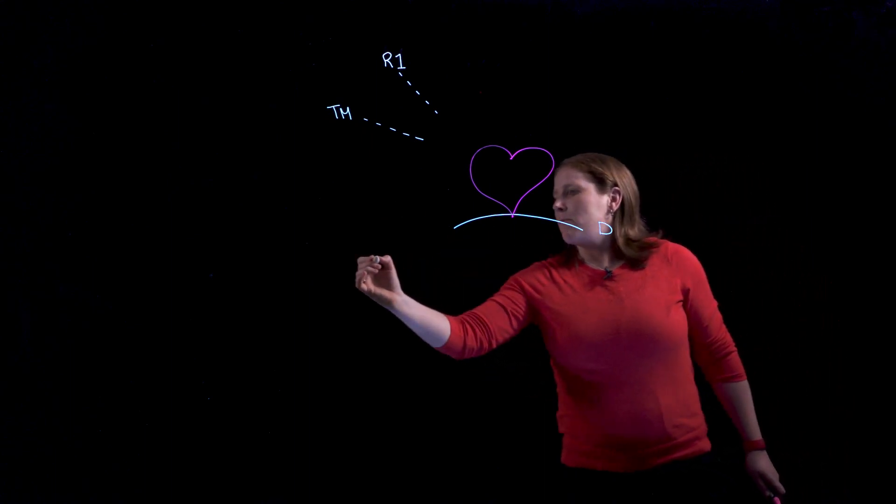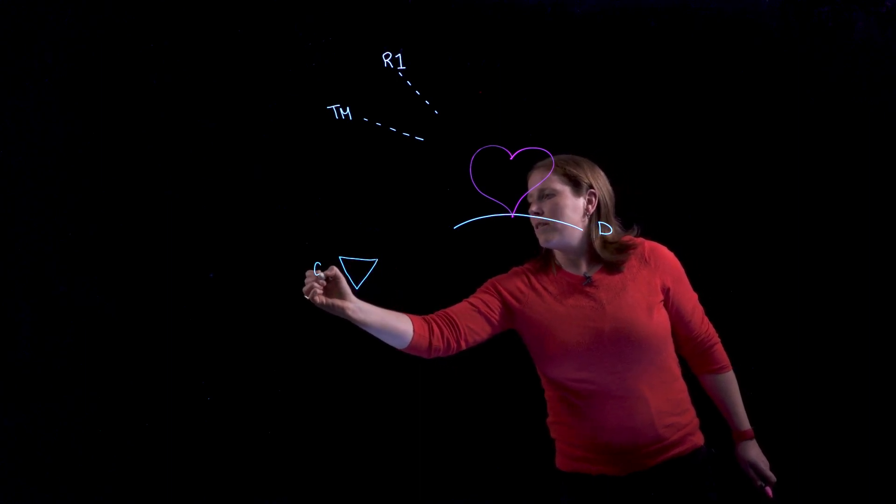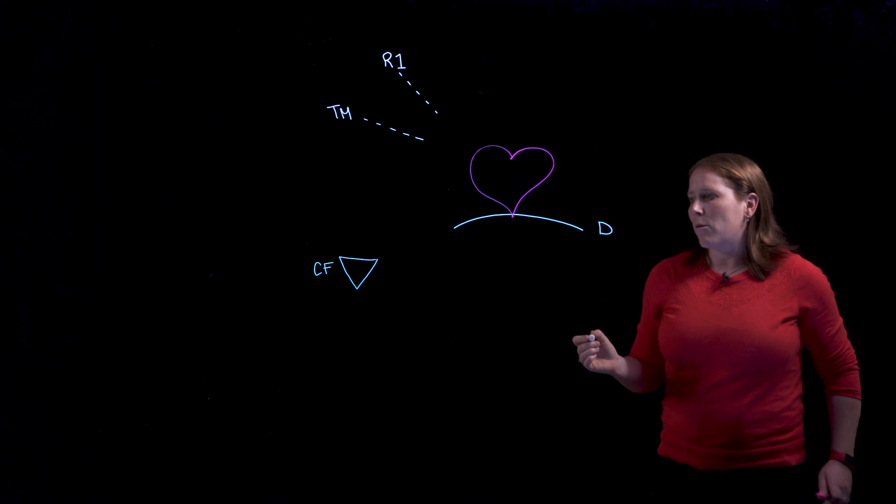The next landmark that's going to be important is this triangular region here, the cubital fossa found at the anterior aspect of the elbow.